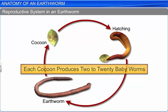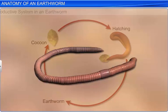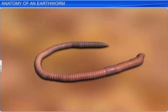We've just studied the anatomical features of the earthworm, such as the body wall structure, alimentary canal, and circulatory, nervous, and reproductive systems.